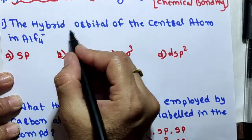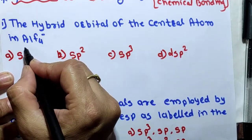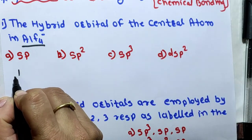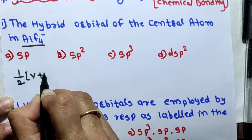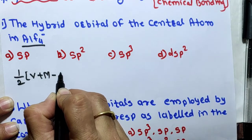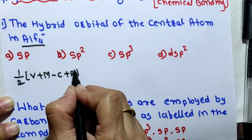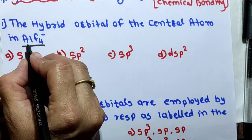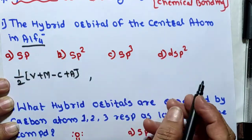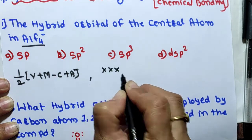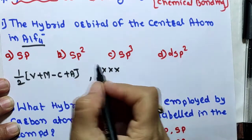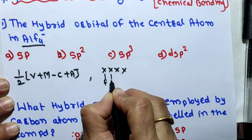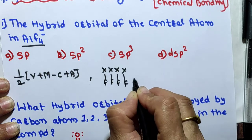Let's start the MCQ. The hybrid orbitals of the central atom in AlF₄⁻. In one of my previous videos I discussed the formula: half into (valence electrons + monovalent electrons − cation + anion). From this formula we can easily find out the hybridization. For aluminium, valence electrons are three. For the minus charge, we add one electron.